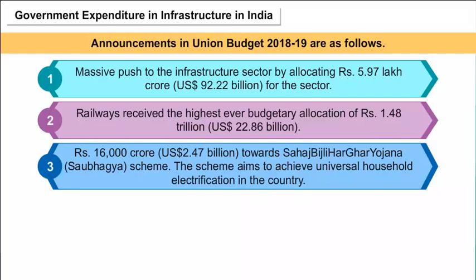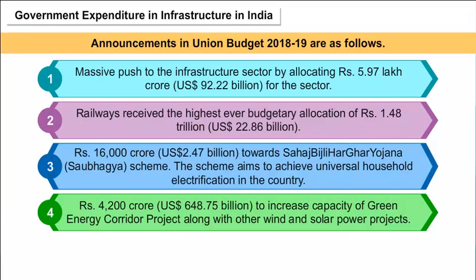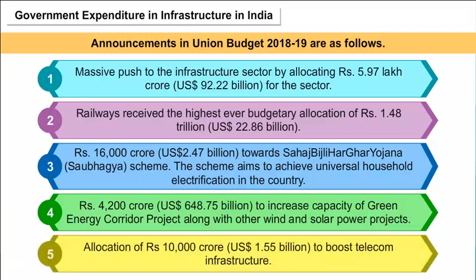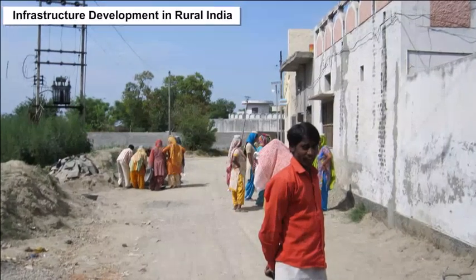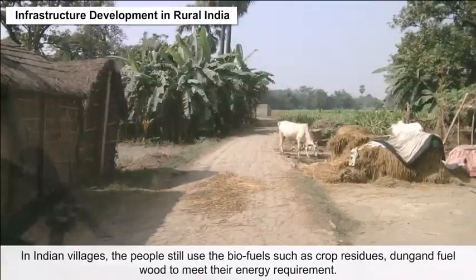The Saubhagya Scheme aims to achieve universal household electrification in the country. Rs. 4,200 crores (Rs. 648.75 billion) were allocated to increase the capacity of the green energy corridor project along with other wind and solar power projects. Additionally, Rs. 10,000 crores (Rs. 1.55 billion) were allocated to boost telecom infrastructure.